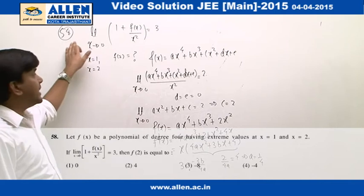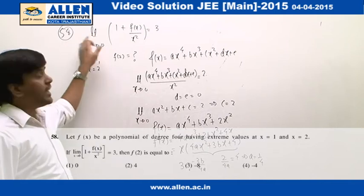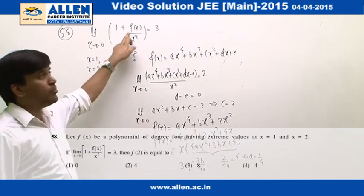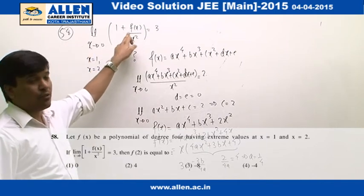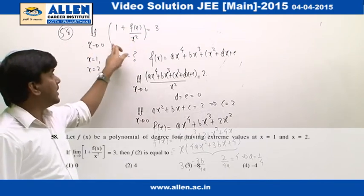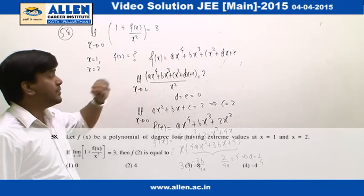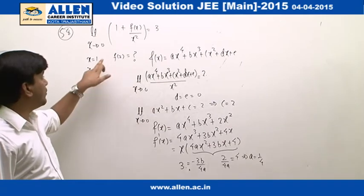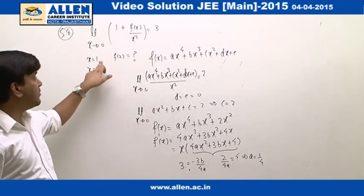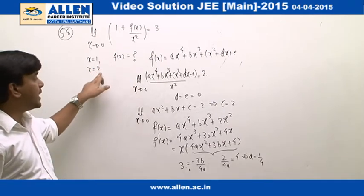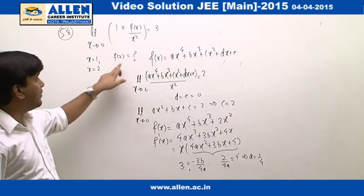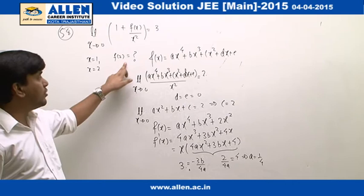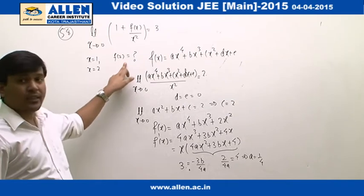In question number 58, f(x) is a polynomial of degree 4, this limit is 3, and the value of f'(x) vanishes at x=1 and x=2. We have to calculate the value of f(2).